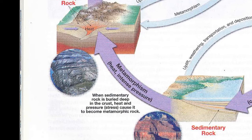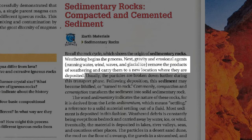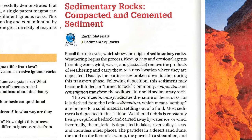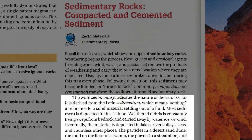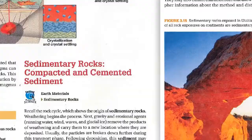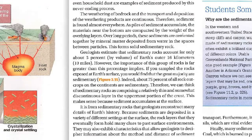Let's go back to the sedimentary rock section. Weathering begins the process. Next, gravity and erosional agents — running water, wind, waves, and glacial ice — remove the products of weathering and carry them to a new location where they are deposited. How gravity and erosion deposits, which are strictly downhill in nature, end up in a completely opposite location does not appear to be a discussion in an earth science education book. The paragraph continues explaining that particles turn into rock. It erodes in a downhill fashion, collects in the lowest places. These downhill-only processes are described as never-ending and continuous.